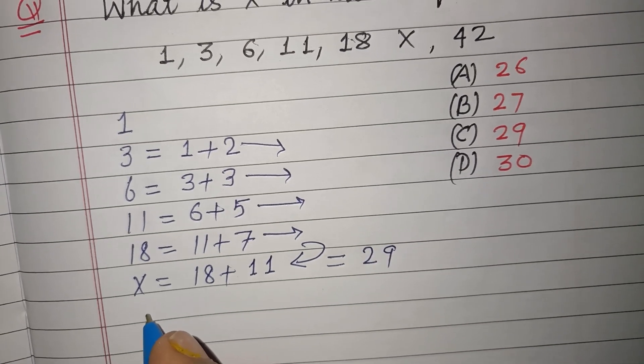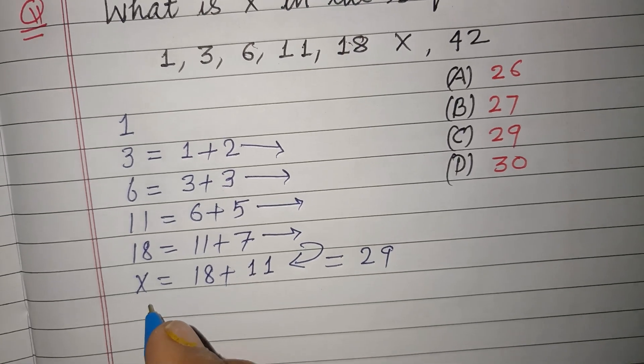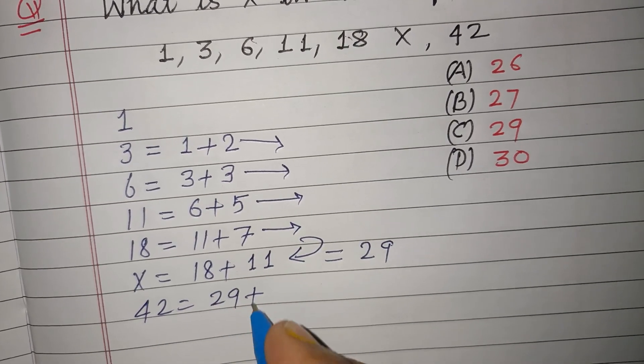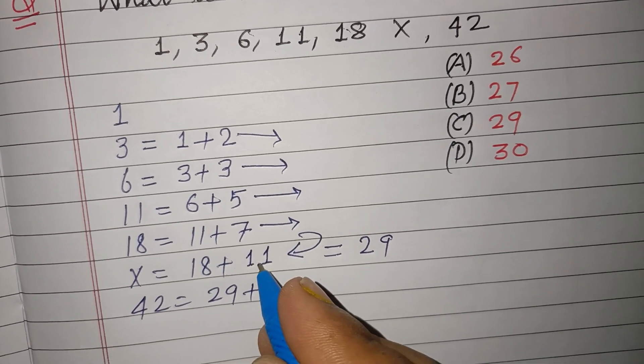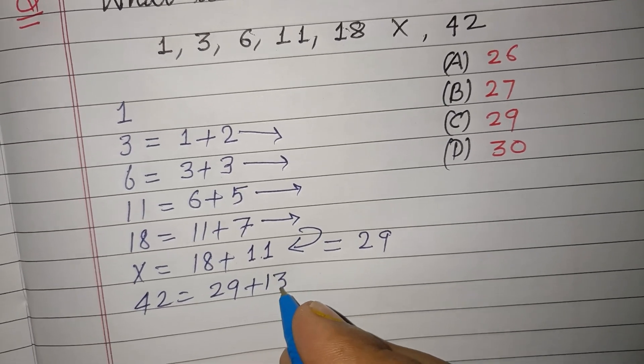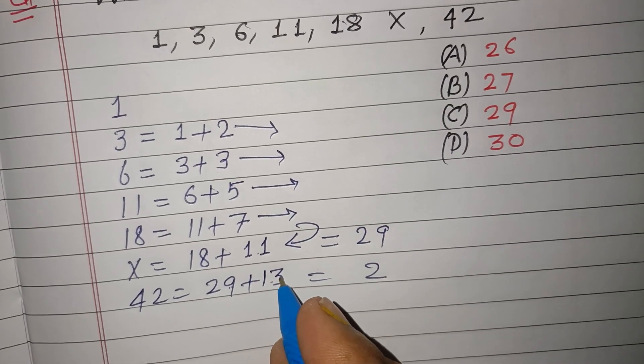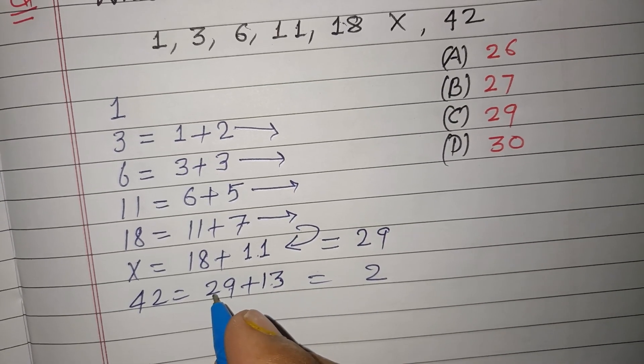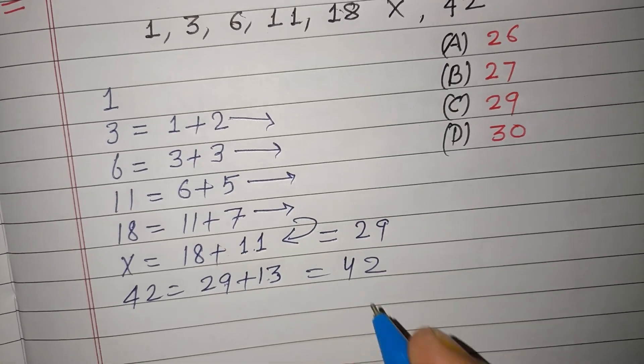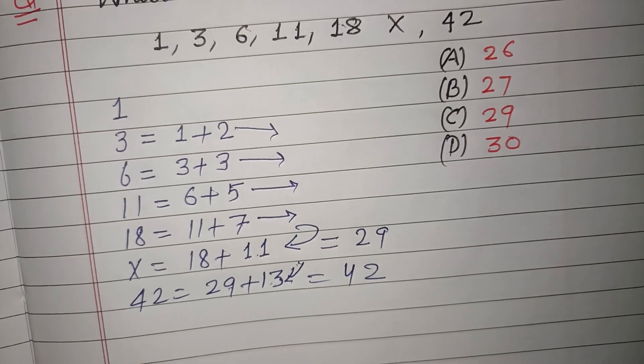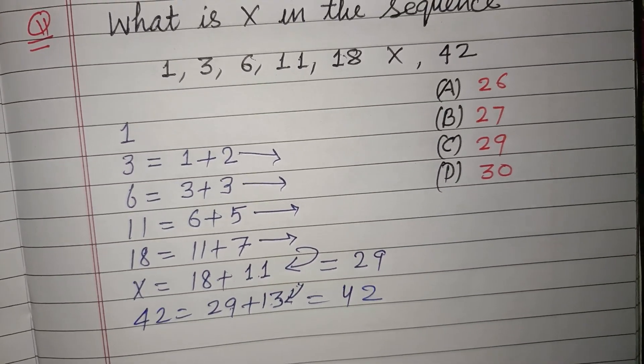Now the next number is 42, which is obtained from 29 plus the next prime number, which is 13. So 29 plus 13 equals 42. So we are adding prime numbers to each term to get the next term.